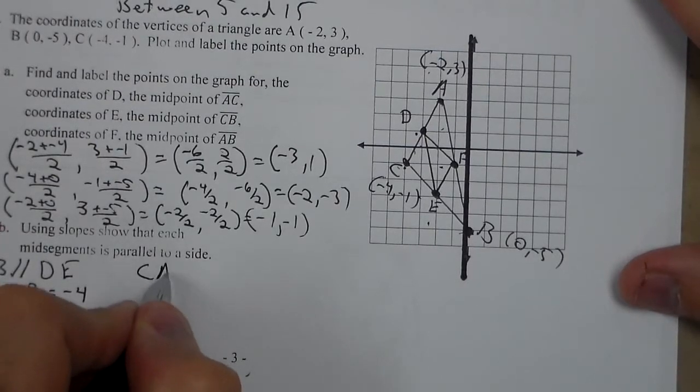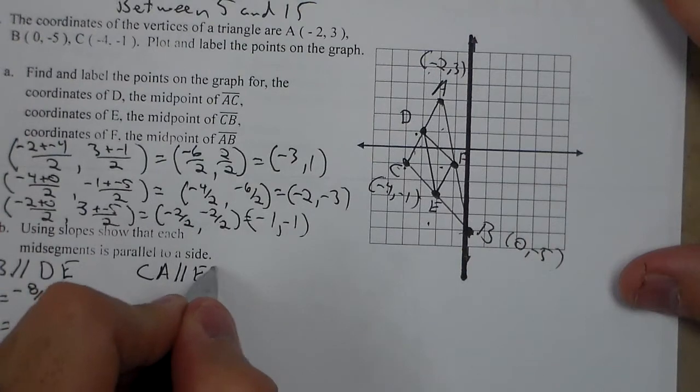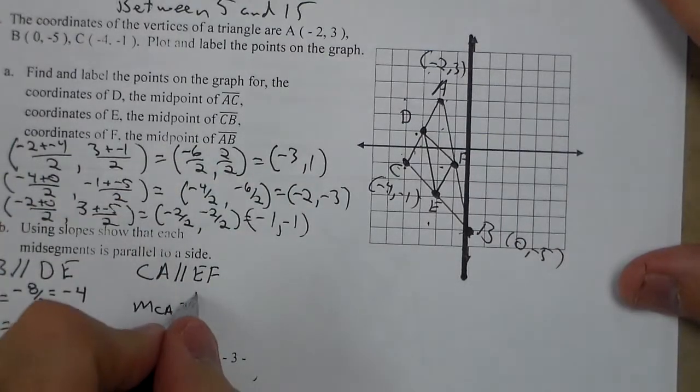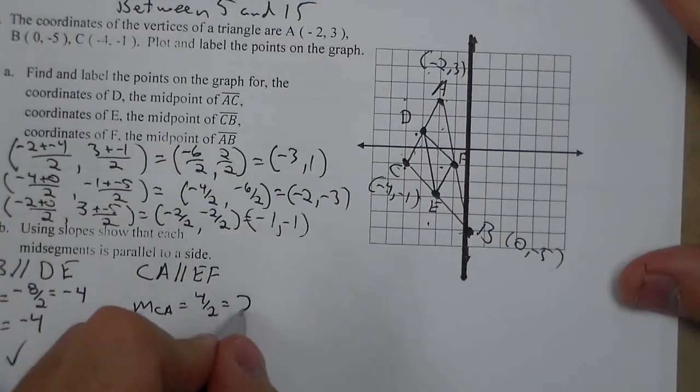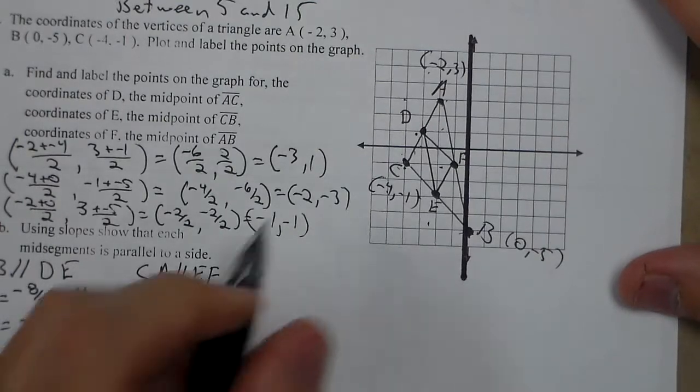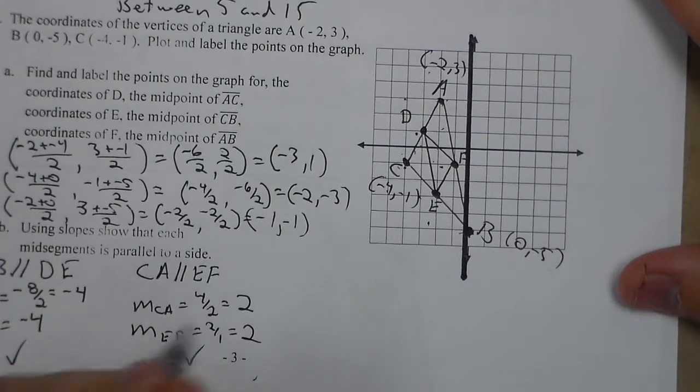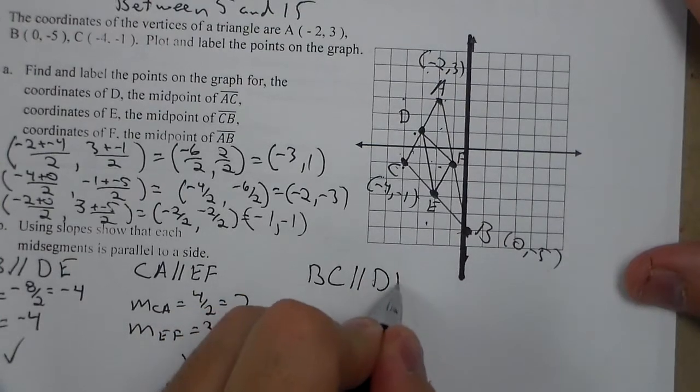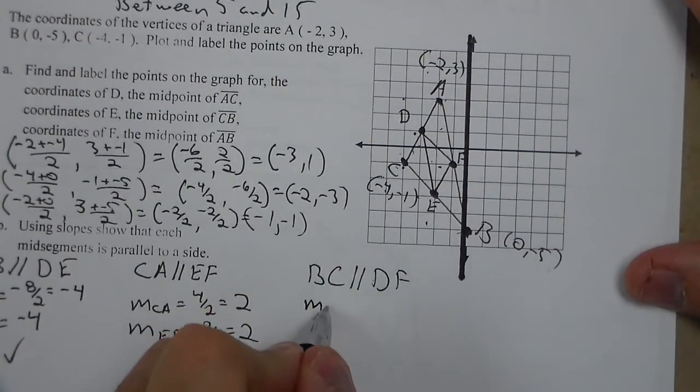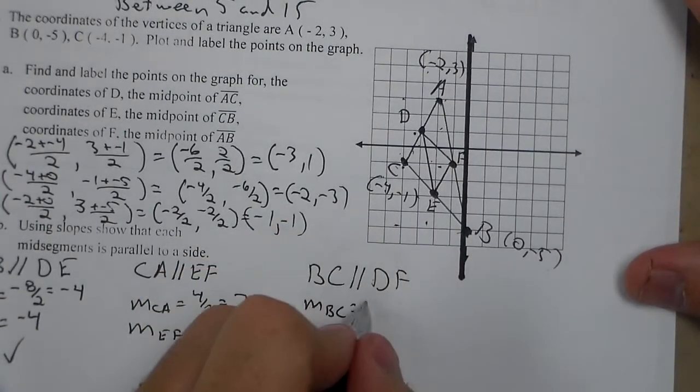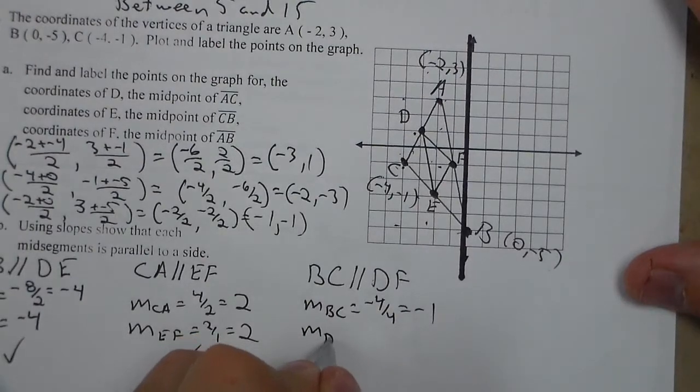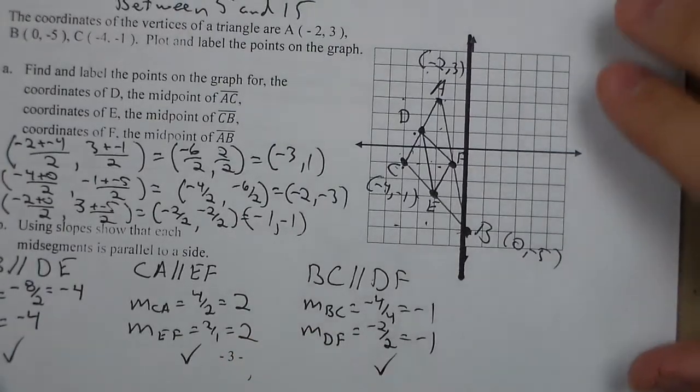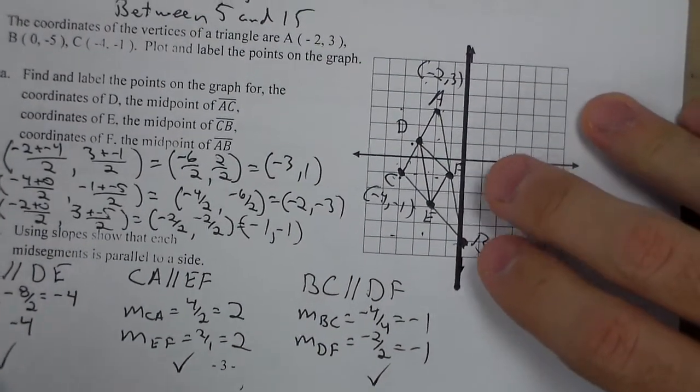If we look at CA parallel to EF, the slope of CA goes up 4, 2 to the right. So that's 4 over 2, which would be a slope of 2. Our slope of EF is it goes up 2, 1 to the right. So that would be a slope of 2. That one checks out. The last one we have is BC parallel to DF. We go a slope of BC first. We go down 4, 4 to the right. Gives me a slope of negative 1. DF, we go down 2, 2 to the right. Also a slope of negative 1. So we see that our slopes are in fact equal. So they are parallel lines.